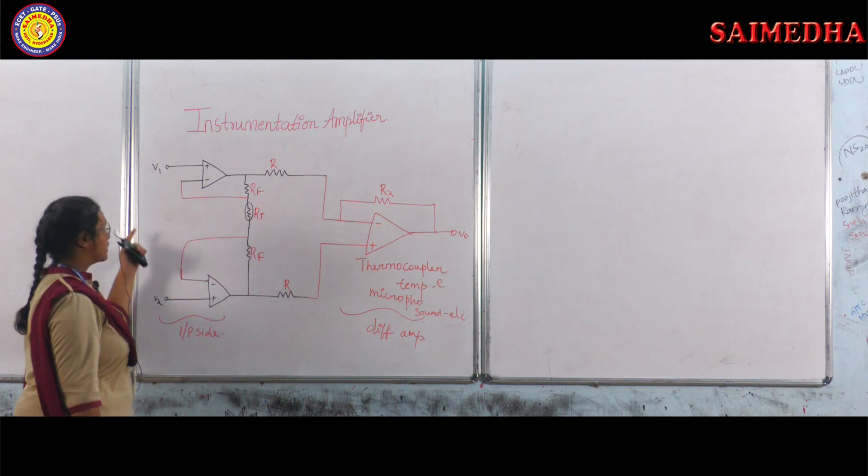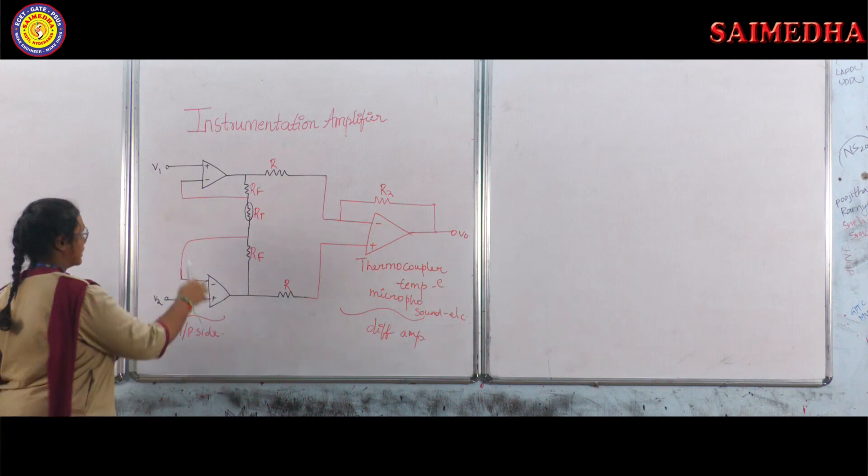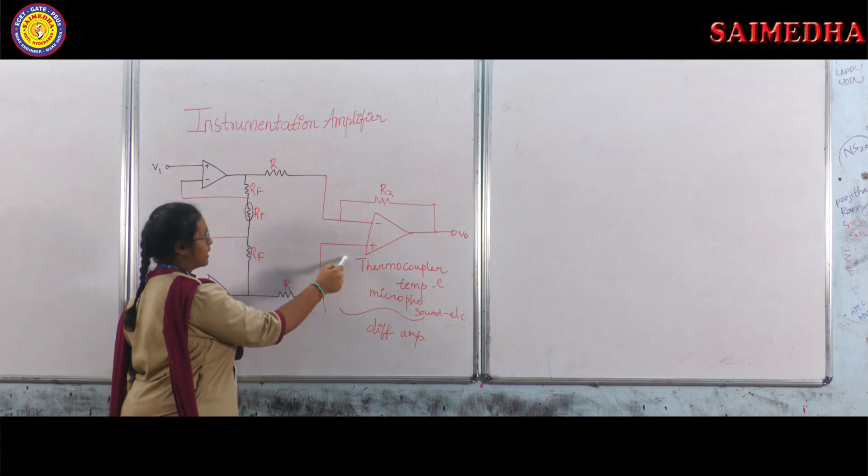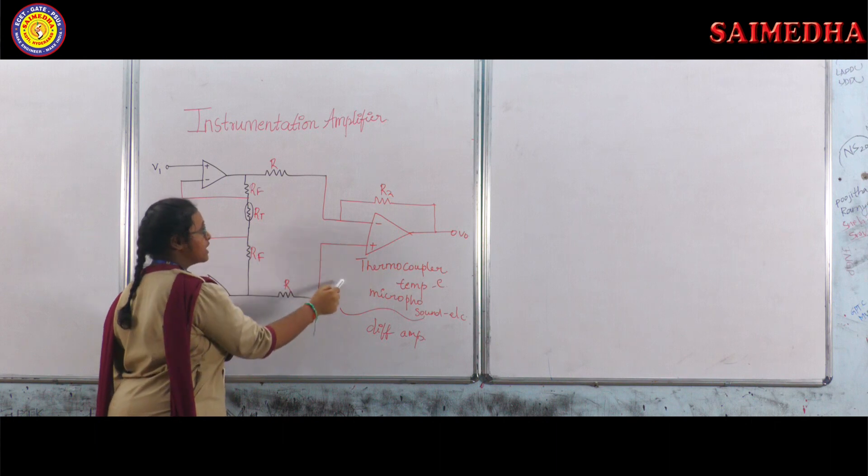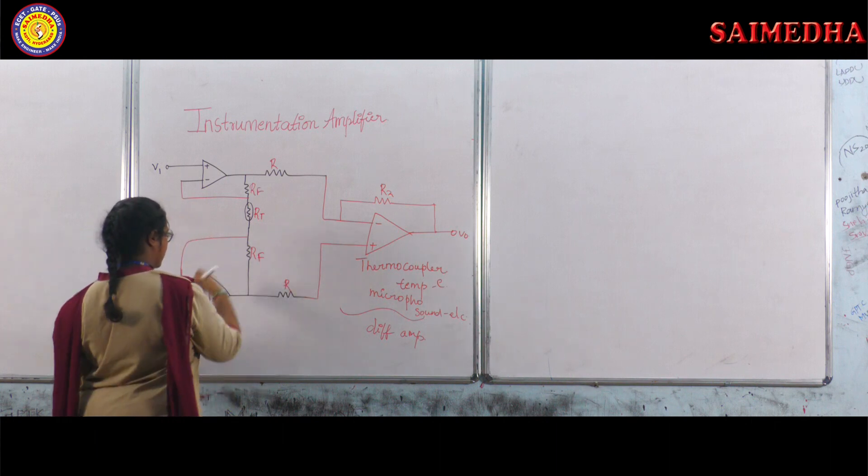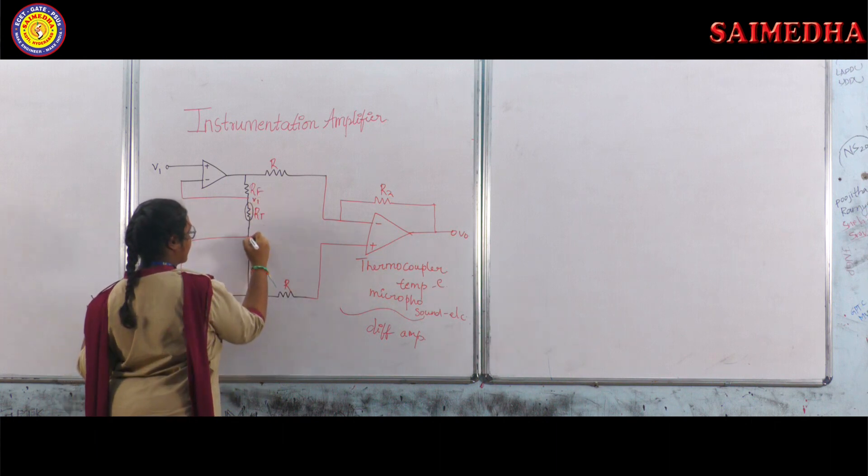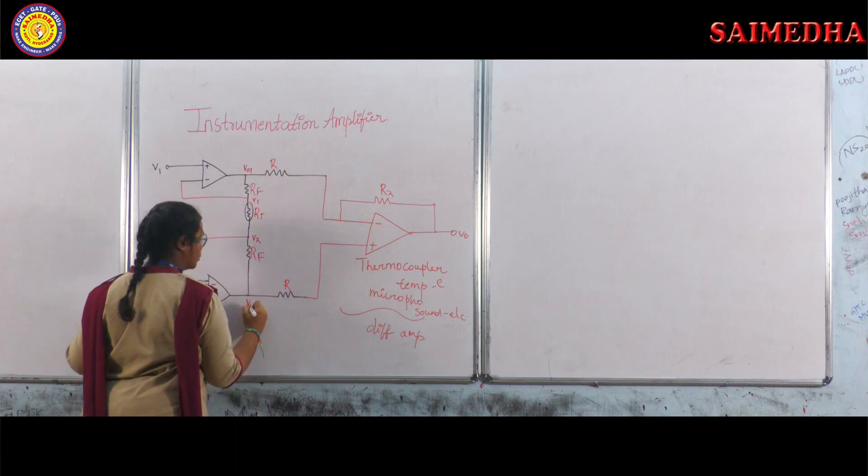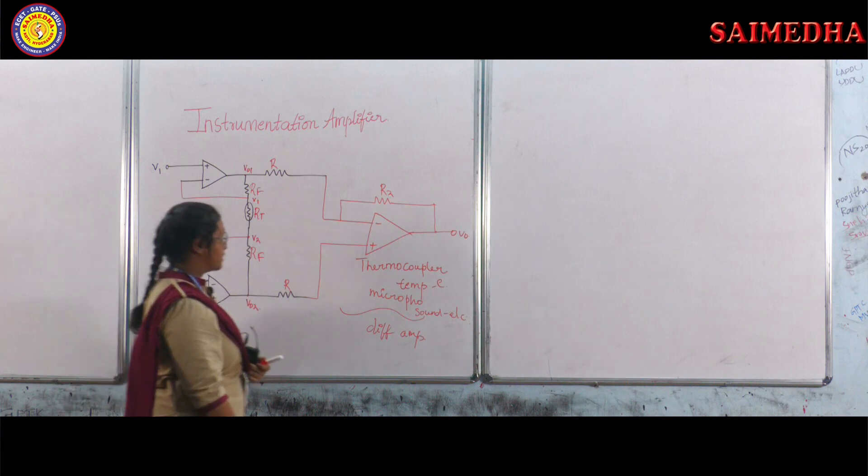This is a circuit diagram of instrumentation amplifier which contains two non-inverting amplifiers and a difference amplifier. The output is fed to this difference amplifier as input. Here we will have V1 and V2, and here we will be having VO1 and VO2. The operation is very simple.